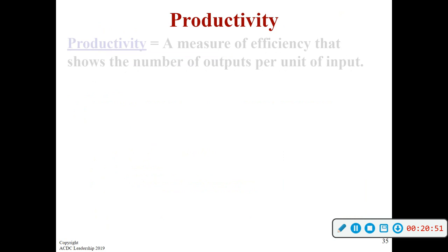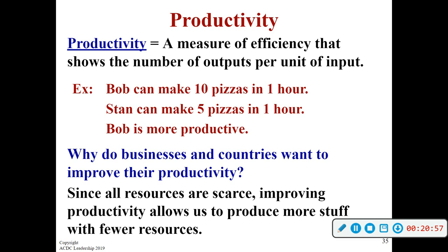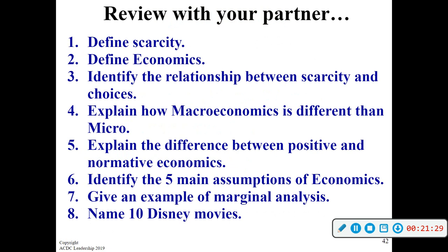Productivity is basically common sense: if Bob can make ten pizzas in one hour and Stan can make five pizzas in one hour, Bob is more productive — he can produce greater output with the same amount of resources. That's all productivity refers to. We'll talk much more about it later on, and that wraps up unit 1.1.